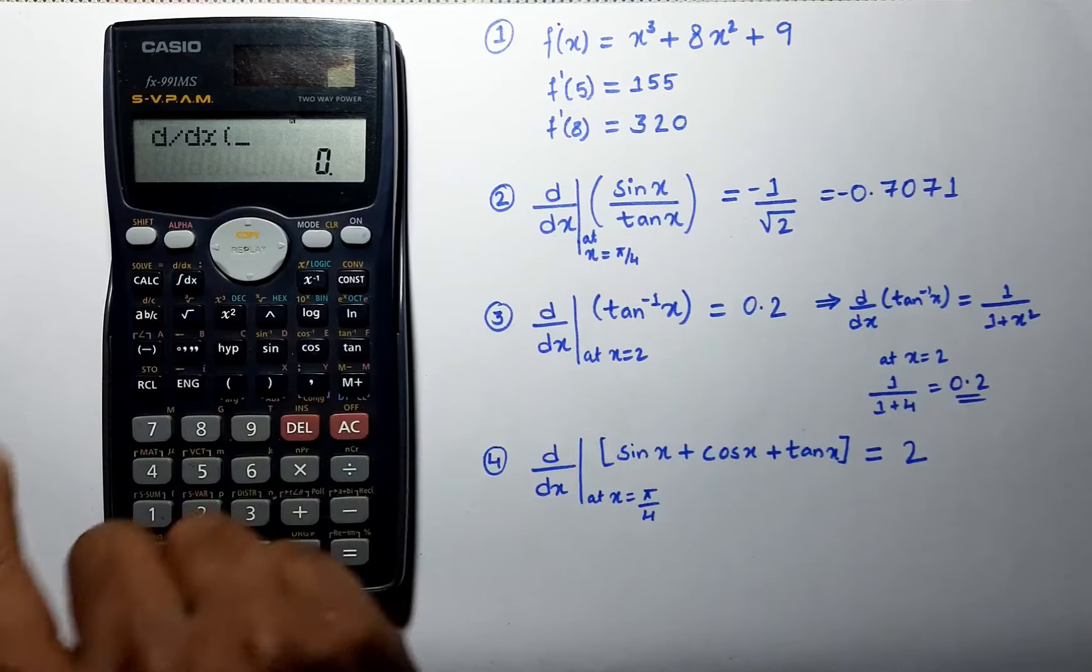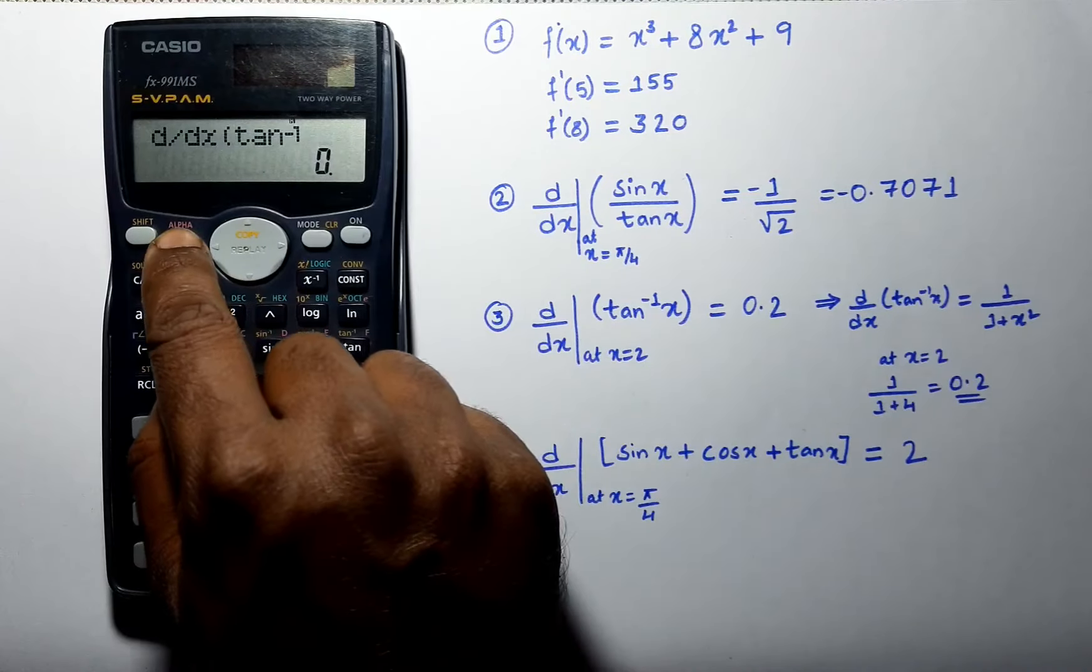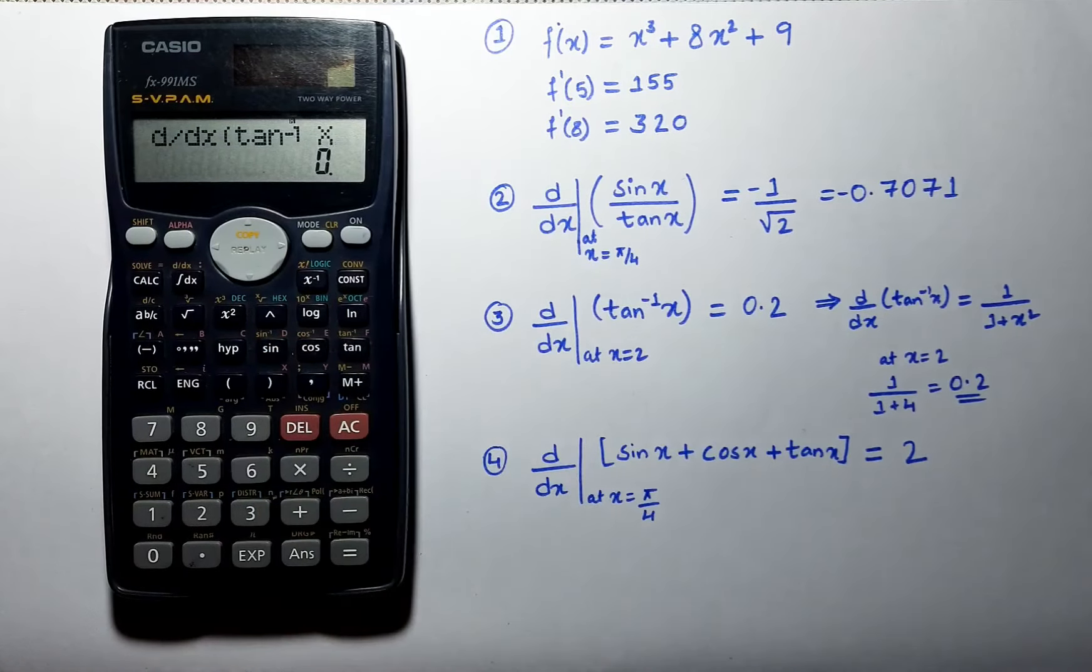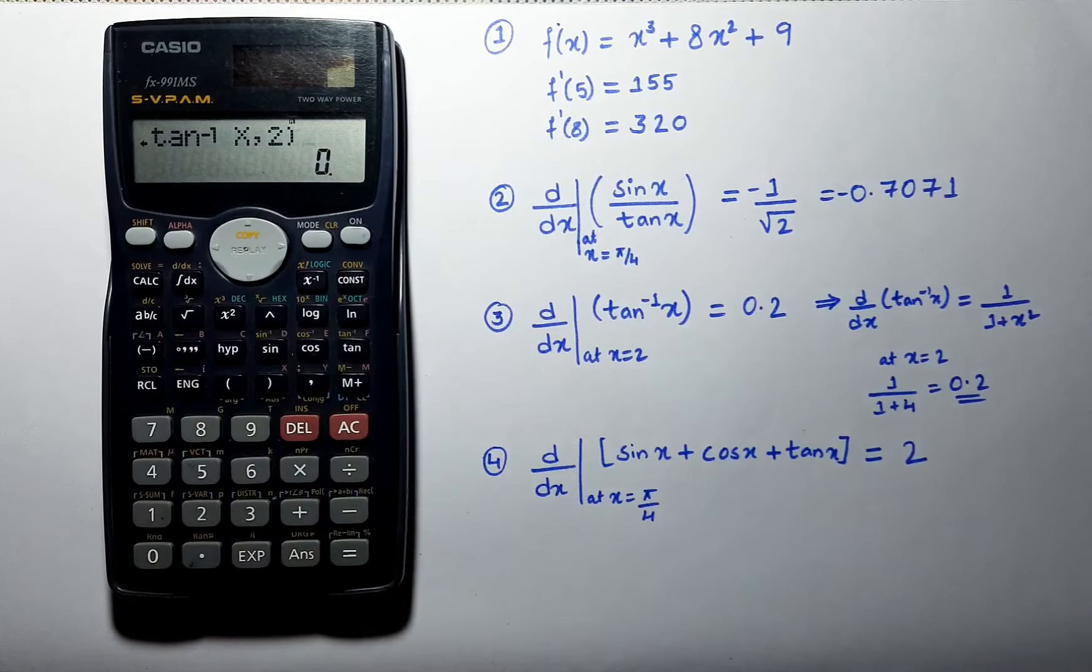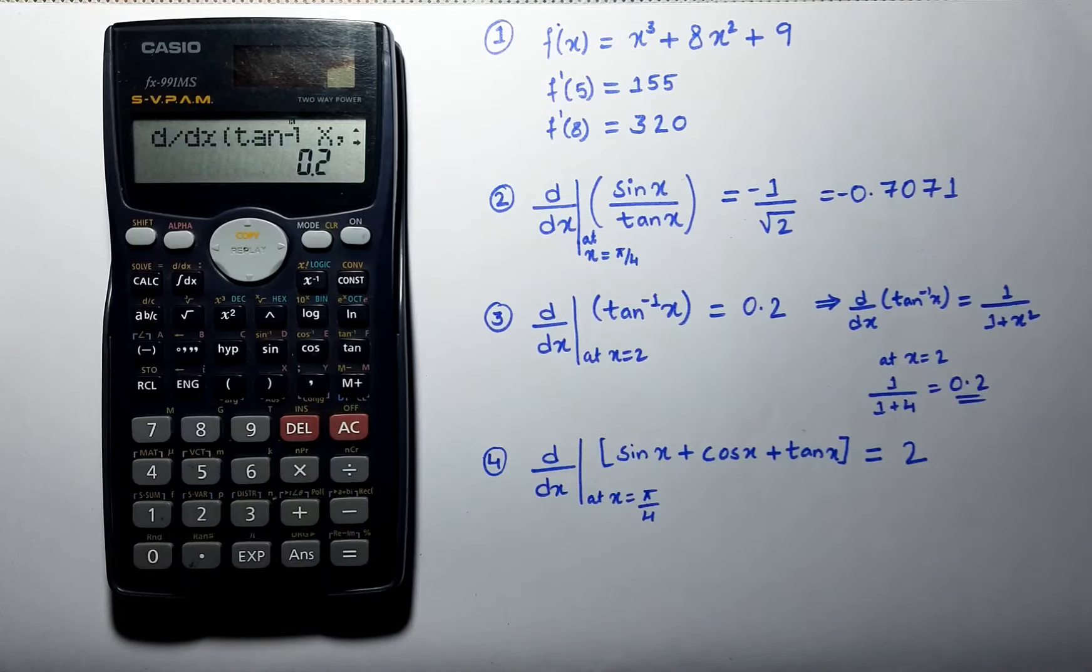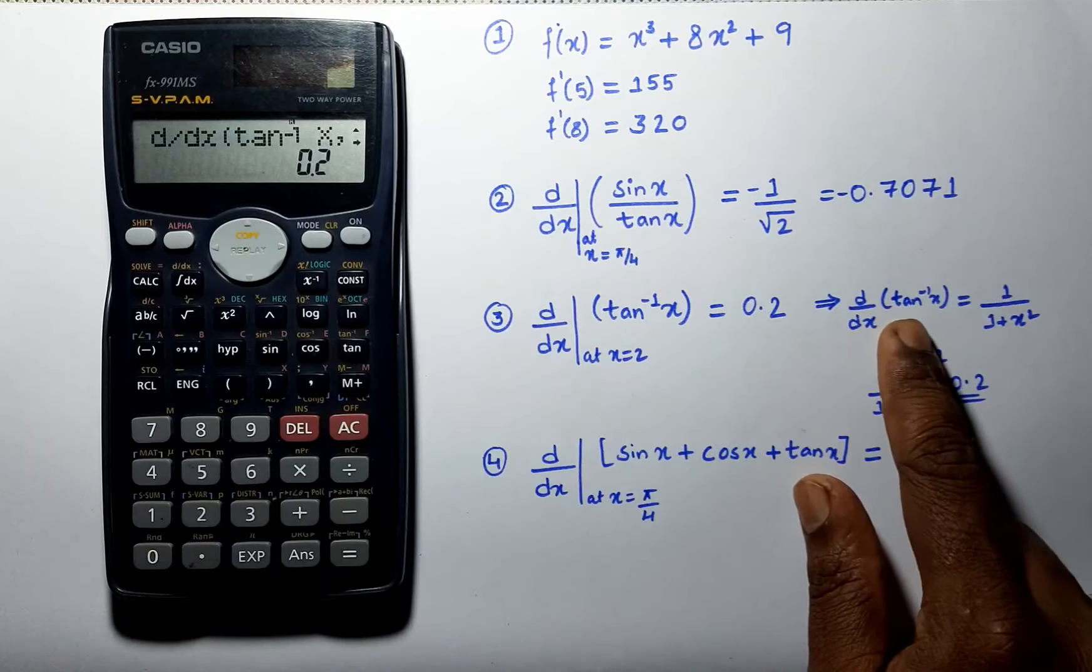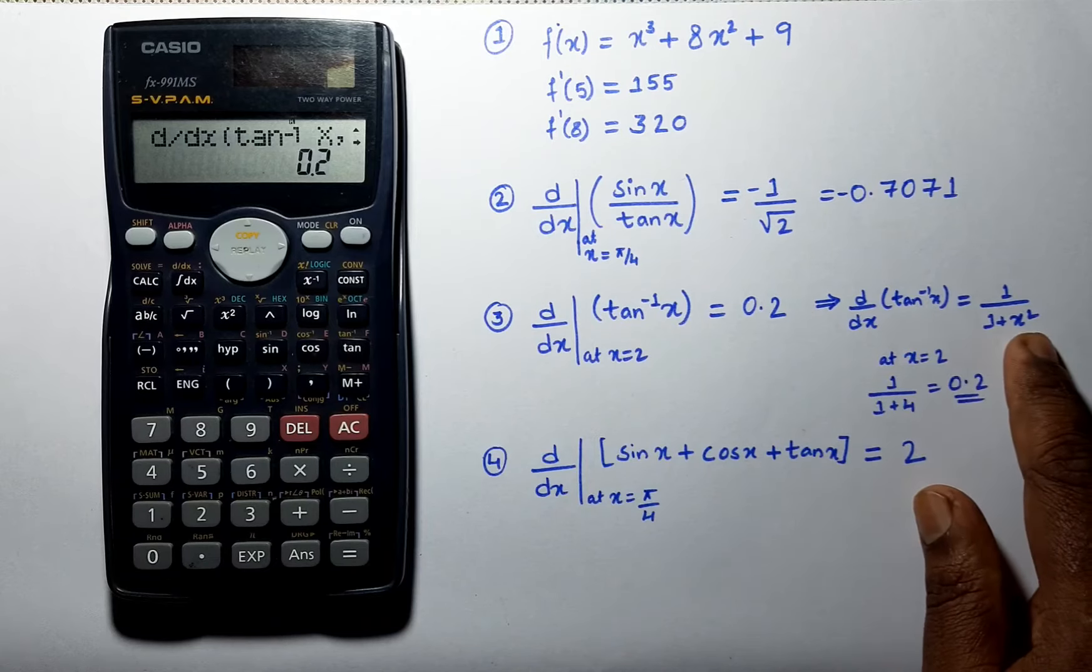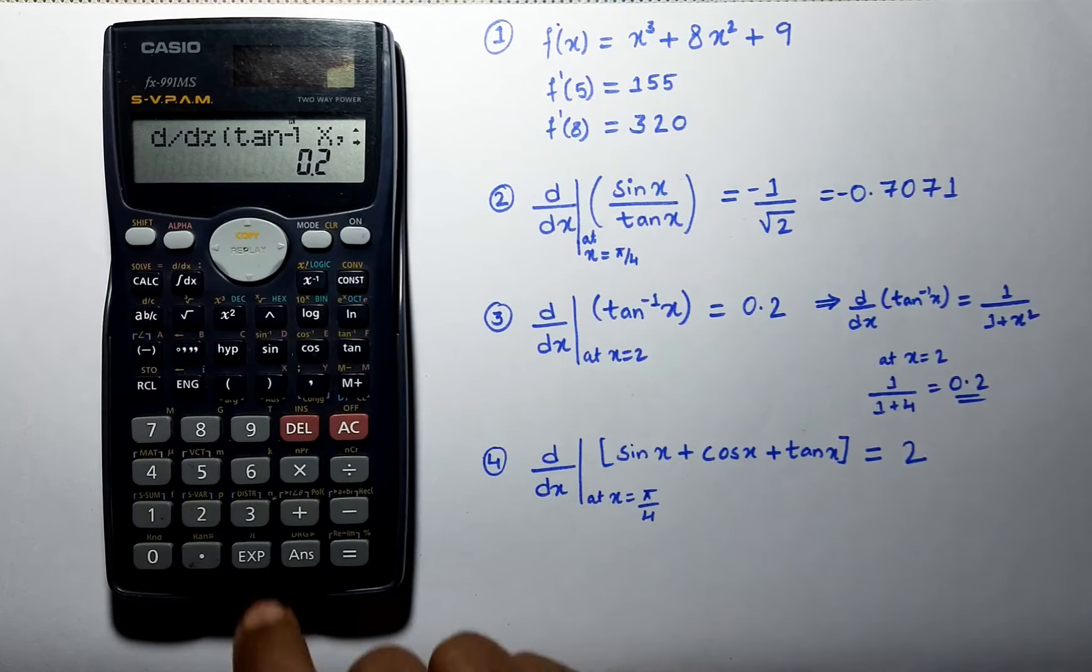Let us solve next problem which is tan inverse of x at a point 2. We can see our answer here. I have solved this problem which is tan inverse x is equal to 1 divided by 1 plus x square. At x is equal to 2 it will be 0.2.